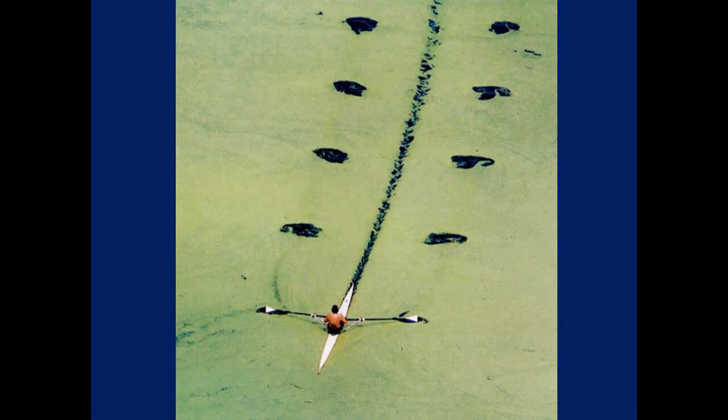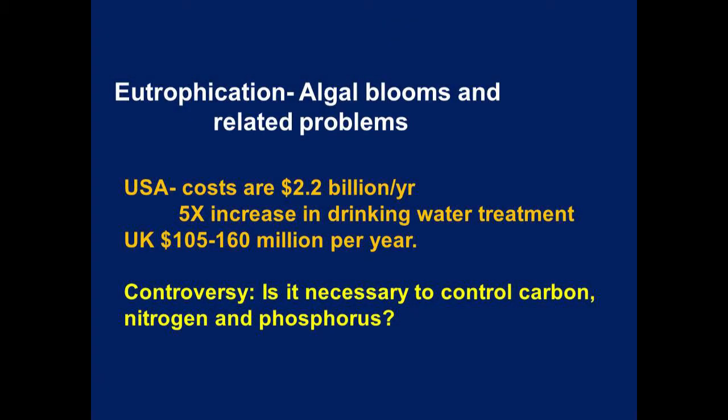Now turning to water quality — the biggest water quality problem globally is eutrophication. The problem which we thought we had developed a solution for in the early 1970s is still the biggest problem in the world. The reason it's a problem is weak-willed regulators continually expanding land use and human populations, and some confusion among scientists who don't seem to be able to follow logical arguments. In the US this costs a couple billion dollars a year, including water treatment costs especially where cyanobacteria are releasing toxins into the water.